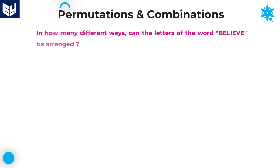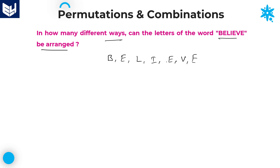Therefore, in 720 ways we can arrange seven persons around a circular table. That is the required answer. Let's move on to the next question: in how many different ways can the letters of the word BELIEVE be arranged? First, how many letters are there? B-E-L-I-E-V-E — these are seven letters total.